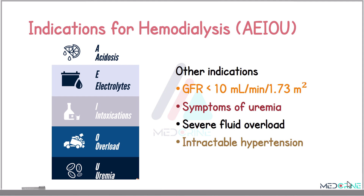Some other severe indications for hemodialysis are a glomerular filtration rate of less than 10 milliliters per minute per 1.73 meters squared, symptoms of uremia, severe fluid overload, and intractable hypertension.